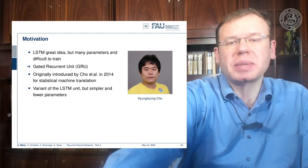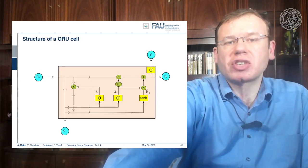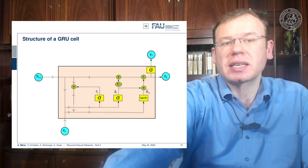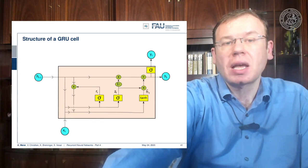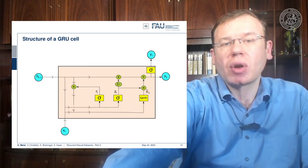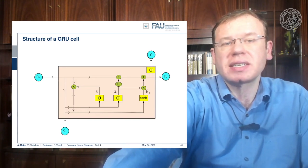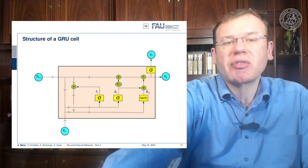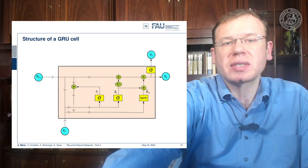The GRU has fewer parameters. In this general setup, we don't have two different memories like in the LSTM — we only have one hidden state. One similarity to the LSTM is that the hidden state flows only along a linear chain, so you only see multiplications and additions. As in the Elman cell, we produce outputs from the hidden state. Let's have a look at the ideas that Cho had in order to propose this GRU cell.